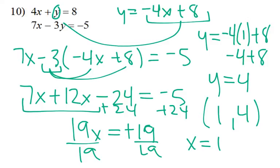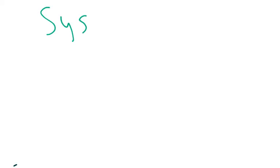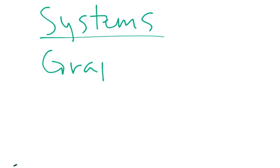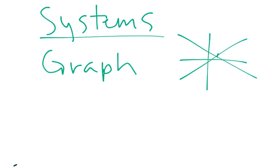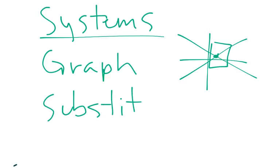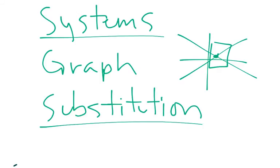So there we go, guys. This is just another way to solve systems of equations. Now we know two methods. With systems, we know we can either graph them and find out where they intersect, or we can use substitution where we don't have to graph — we just solve them out the way we've been doing and find where they intersect.